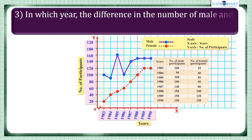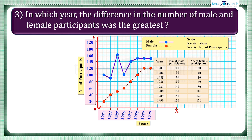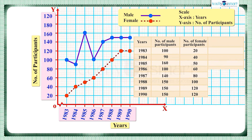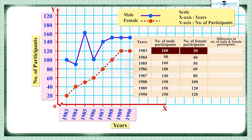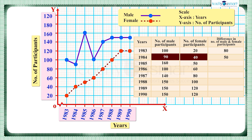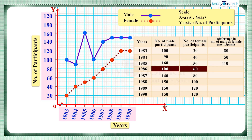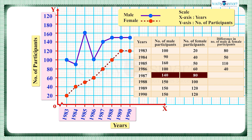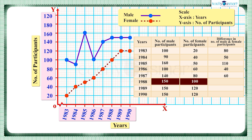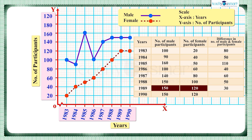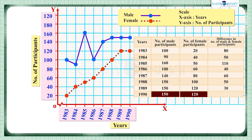Then, in which year was the difference in the number of male and female participants the greatest? Taking the difference in each year: in 1983 the difference was 80, in 1984 it was 50, in 1985 it was 110, in 1986 it was 40, in 1987 it was 60, in 1988 it was 50, in 1989 it was 30, and in 1990 it was also 30.